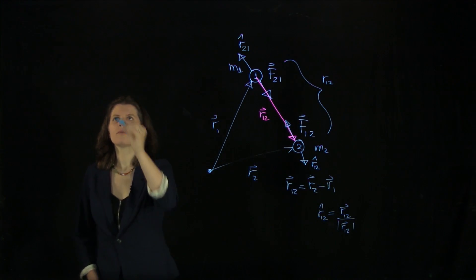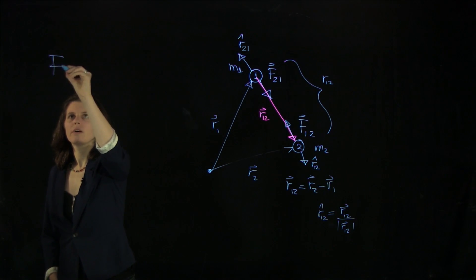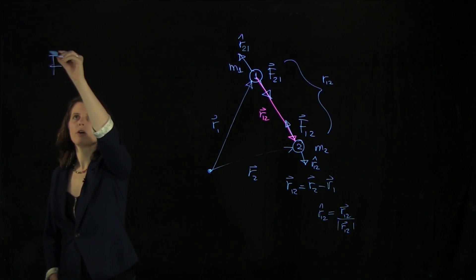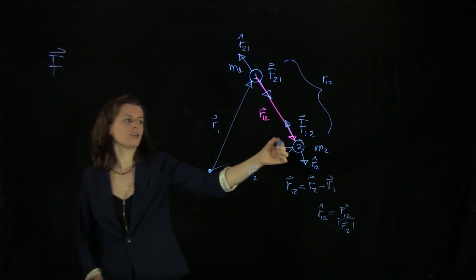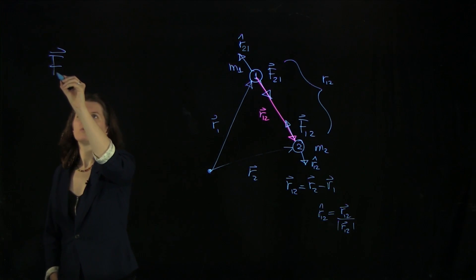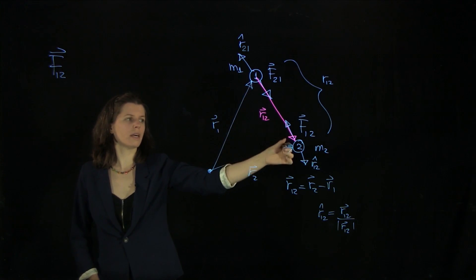And now we can write down the gravitational law. So the force on object, we're going to look at object two. The force on object two, due to the interaction between objects one and two.